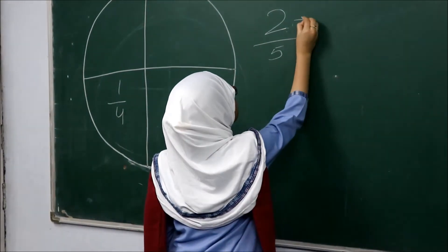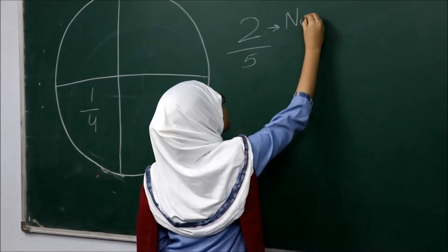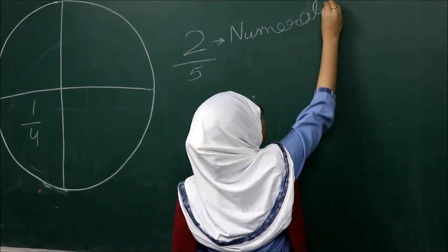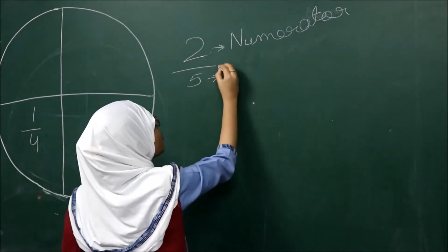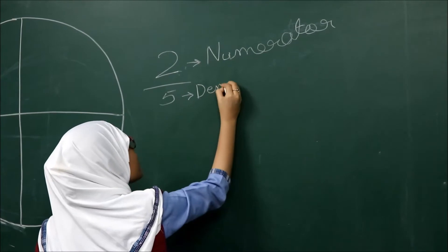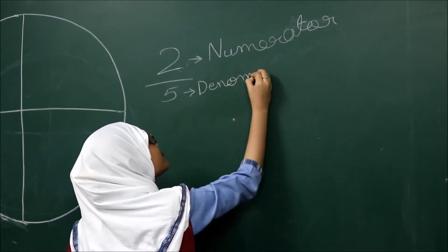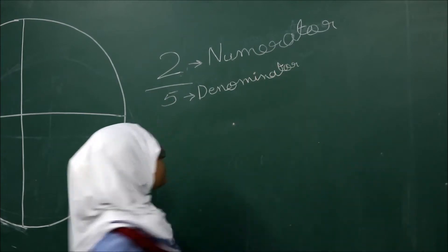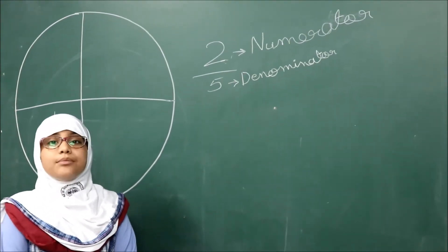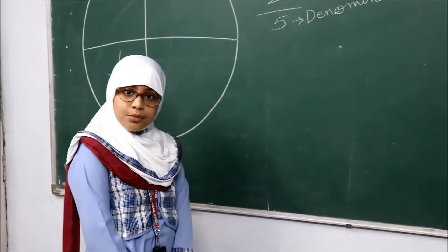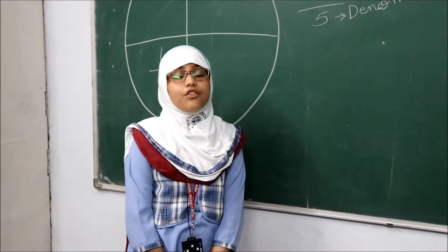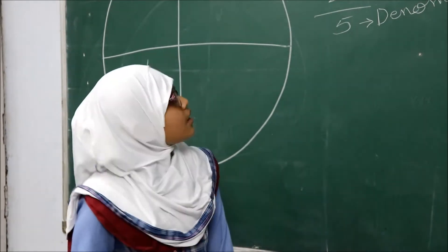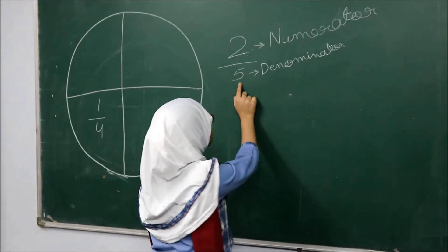Here, 2 is the numerator and 5 is the denominator. Now, as we are all children, sometimes we face problems remembering what is numerator and what is denominator. So today I am going to tell you a very useful trick which will help you easily remember. The numerator is above the denominator, and the denominator is below the numerator.